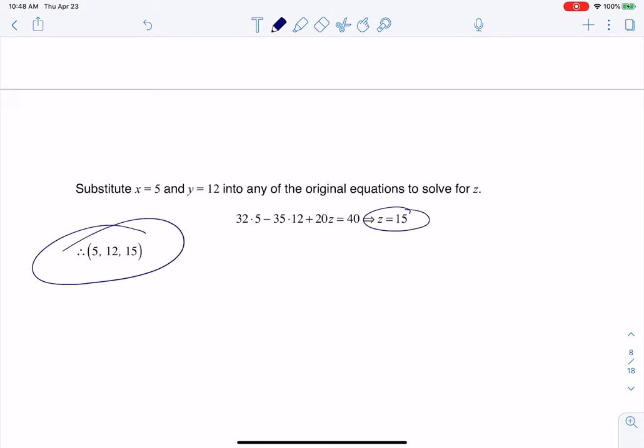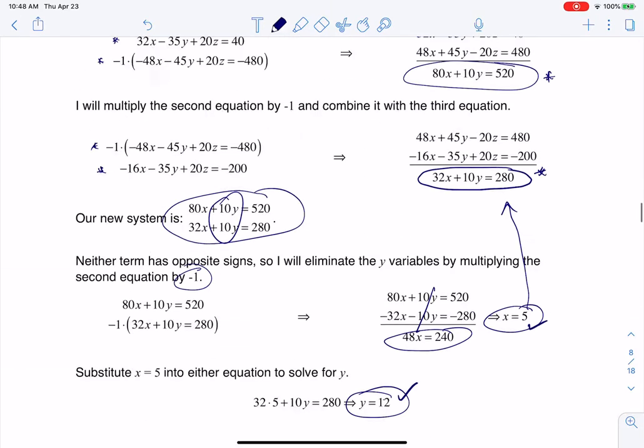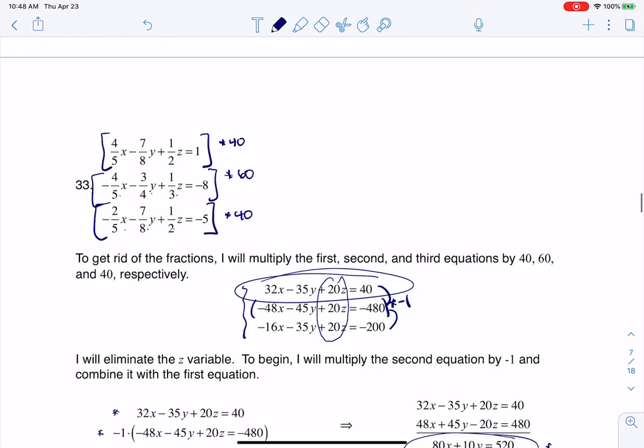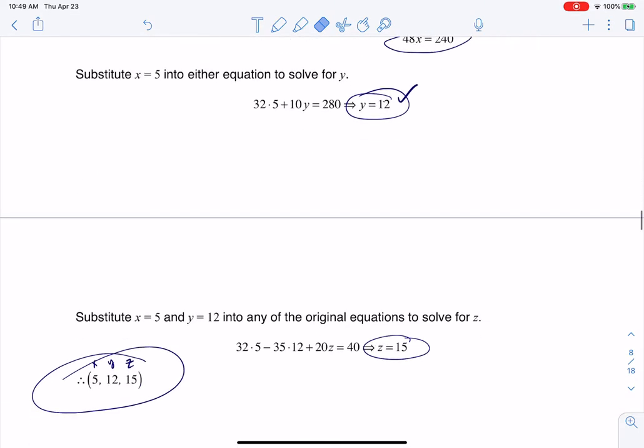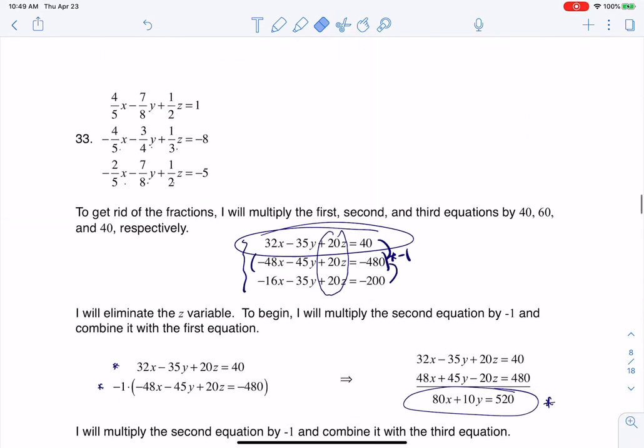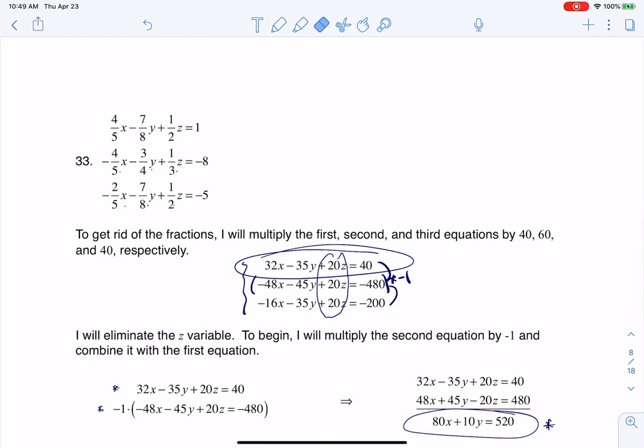So there is my ordered triple. If I ever want to check my answer, I could swap out or I could store 5 in X, 12 in Y, and 15 in Z and go back to my original 3x3 system. So I could plug in the 5, 12, 15. I could plug in for all of these. X being 5, Y being 12, Z being 15.